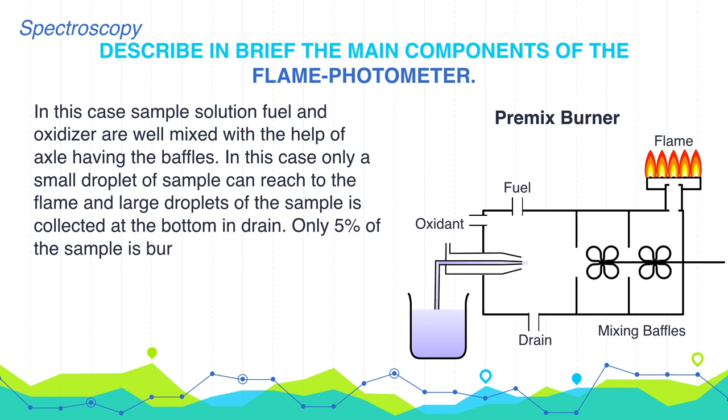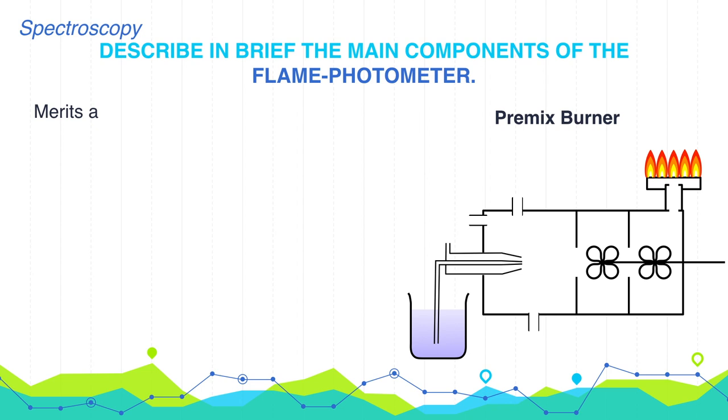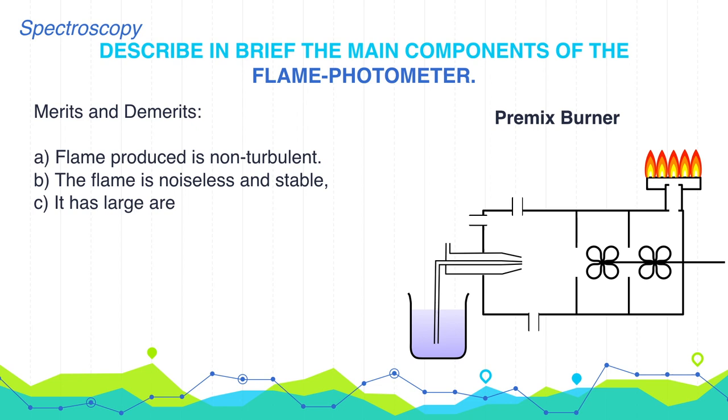These burners are also having some merits and demerits. First, flame produced is non-turbulent. Second, the flame is noiseless and stable. Third, it has large area of cross section. And last, 5% of the sample is burnt while 95% is drained.